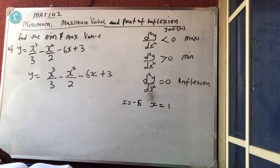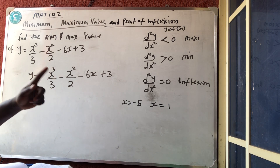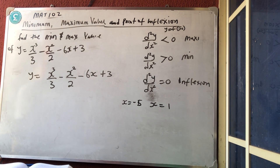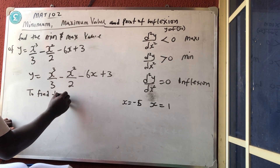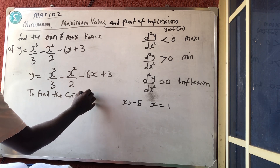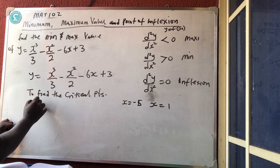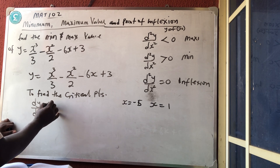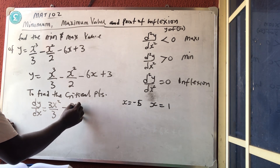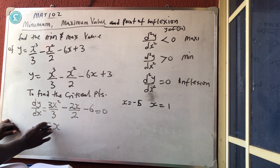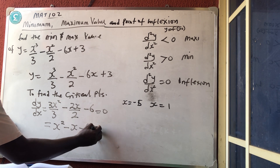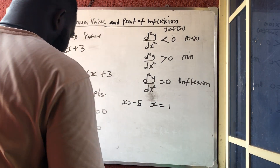If you want to find the minimum and maximum value, the first thing you need to get is the critical points. How do you get the critical points? Just differentiate once, equate it to 0, and find x. That x you find is called the critical points. So to find the critical points, we differentiate once. dy/dx is equal to 3x² over 3 minus 2x over 2 minus 6, which gives us x² minus x minus 6 equal to 0.